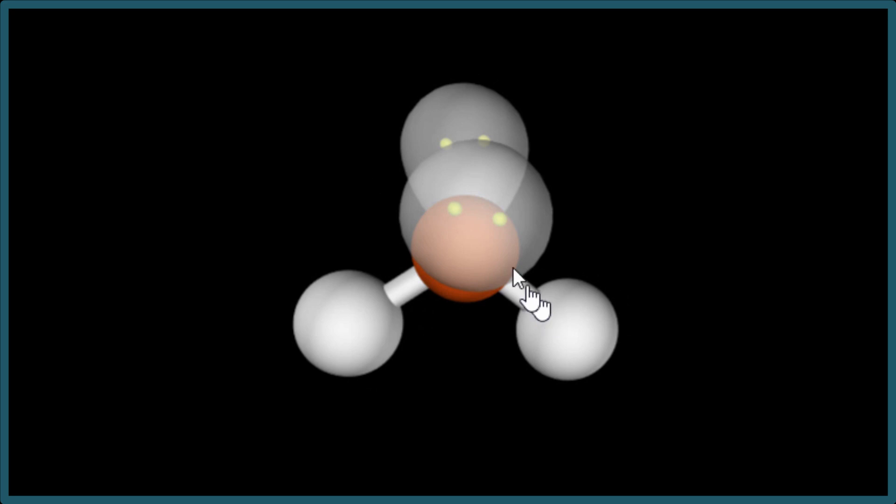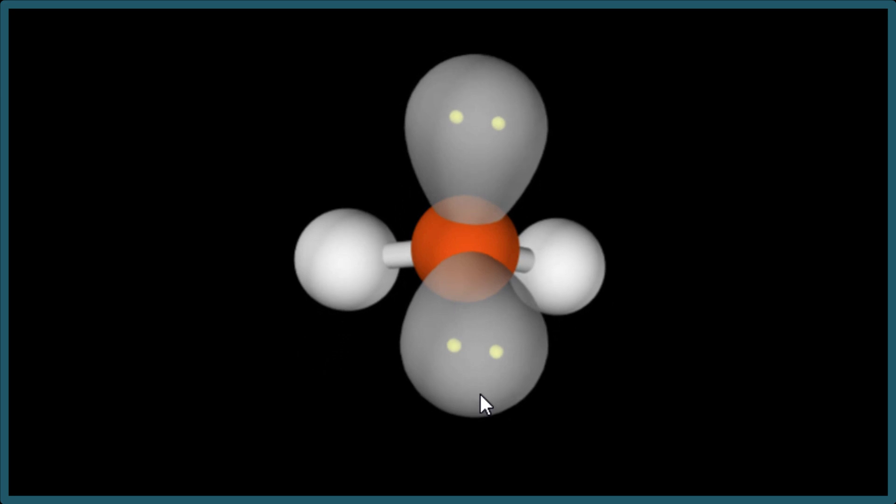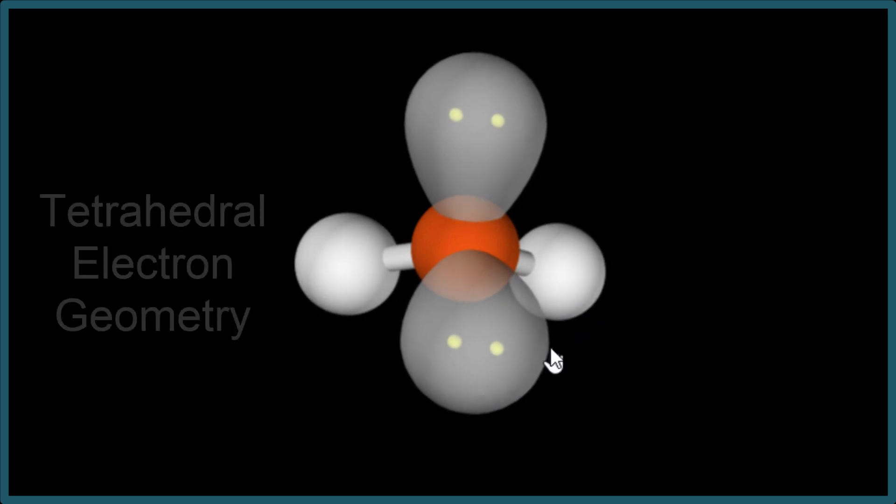We no longer consider this bent but now we have four things attached. And if we kind of move them like this, you can see how they're all spread out in this tetrahedral electron geometry.